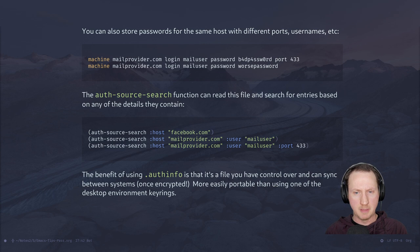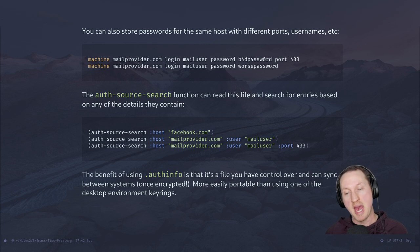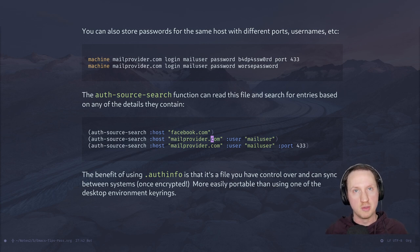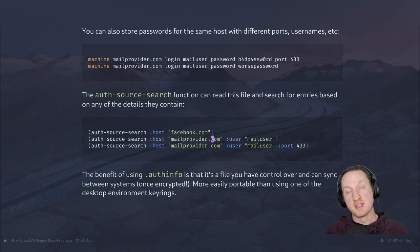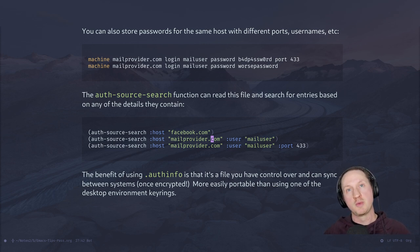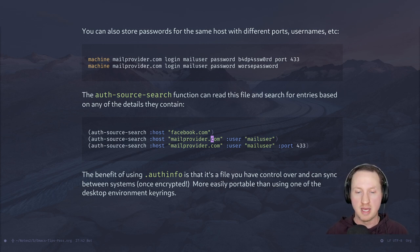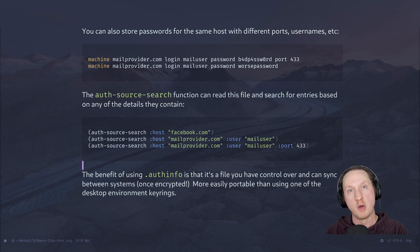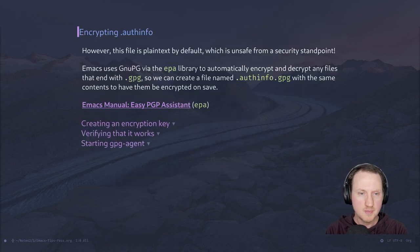The benefit of using the .authinfo file when it's encrypted — not unencrypted — is that you have more control over the file. It's not owned by some other program you can't easily inspect. You can also sync these files between systems using something like Syncthing. If it's encrypted, that requires the same GPG keys on multiple machines — we'll talk about that in another episode. It's nice to have a file that you have ownership of and can manage yourself.